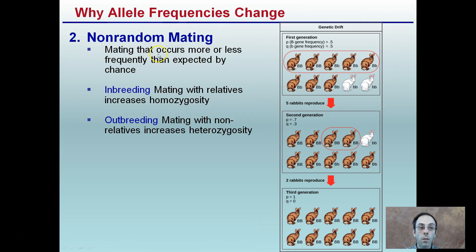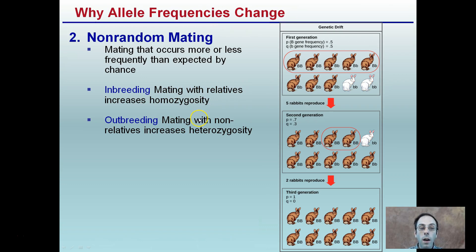Non-random mating occurs more or less frequently than expected by chance. Inbreeding — mating with relatives — increases homozygosity. Outbreeding — mating with non-relatives — increases heterozygosity. Non-random mating means individuals are being selected for some reason; it's not just random. For example, the brown color might be deemed favorable.